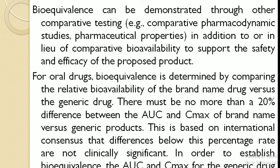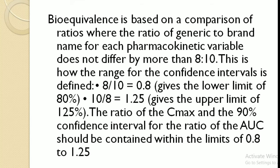To establish bioequivalence, the AUC and Cmax for the generic drug are compared with those of the branded drug. Bioequivalence is based on comparison of ratios, where the ratio of generic to brand name for each pharmacokinetic variable does not differ by more than 20%. The range for the confidence interval is defined as: 8/10 equals 0.8 giving the lower limit, and 10/8 equals 1.25 giving the upper limit. The ratio of Cmax and the 90% confidence interval for the ratio of AUC should be contained within the limits of 0.8 to 1.25.